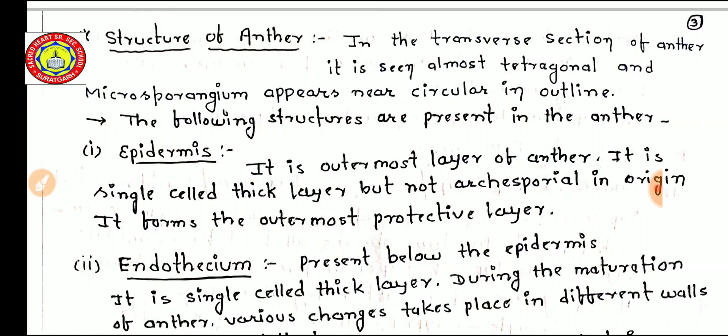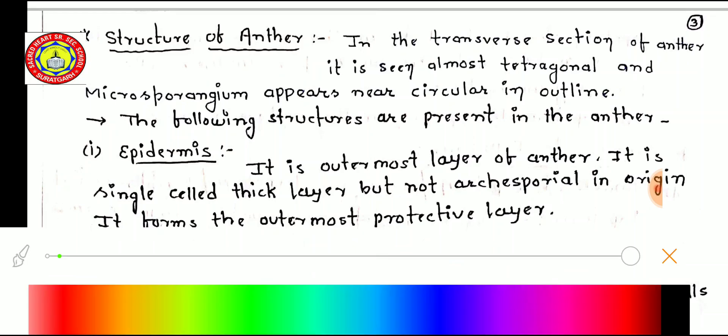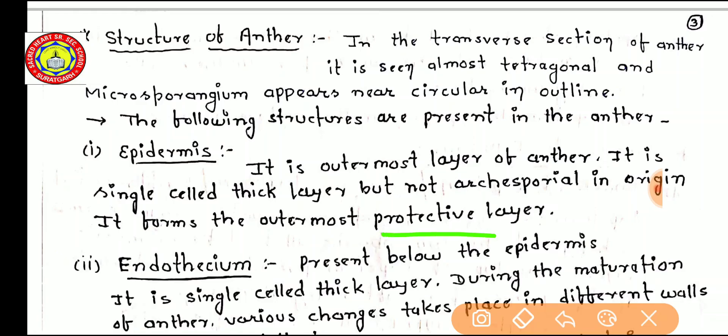The first and outermost layer is known as the epidermis. It is a single cell thick layer but not archesporial in origin. It forms the outermost protective layer, which protects the microsporangium and pollen sac.